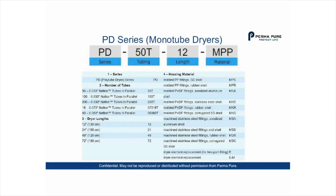Let's look at the intelligent product numbering system of the PD series. The first part, PD, is the series. The second part indicates the tubing — 50T means 50 Nafion tubes of 0.030-inch OD in parallel, which is a very small diameter tube with high drying efficiency. We also offer PDs with 18 tubes of 0.070-inch or 60 tubes of 0.060-inch. Those two versions were specifically developed for particulate drying.